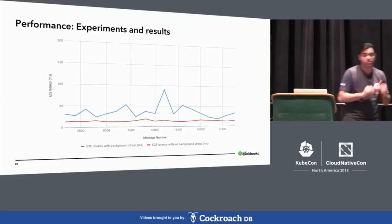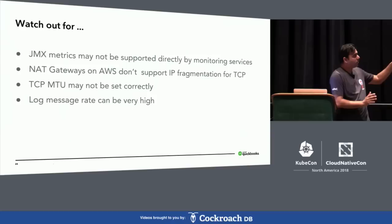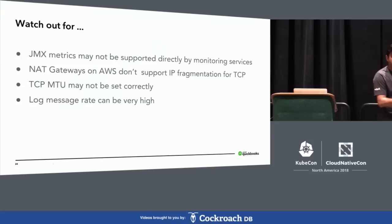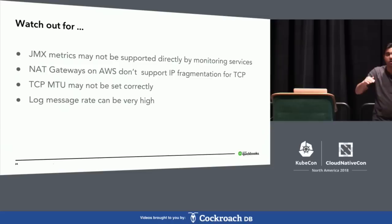Watch out for these small but important tips. JMX metrics are not directly supported by monitoring services — you may need to convert them to another format. NAT gateways on AWS don't support IP fragmentation, so TCP MTU sizes may need to be set correctly. And be careful with log message rates — we once changed broker log level to debug and it overwhelmed Splunk with errors.